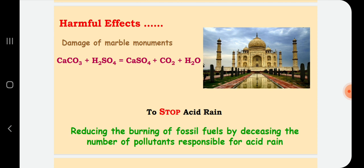So, what can we do to stop acid rain? First of all, we should reduce the burning of fossil fuels so that the number of pollutants responsible for acid rain are decreased in environment. Instead of using fossil fuels, we should use the alternative source of energy production.